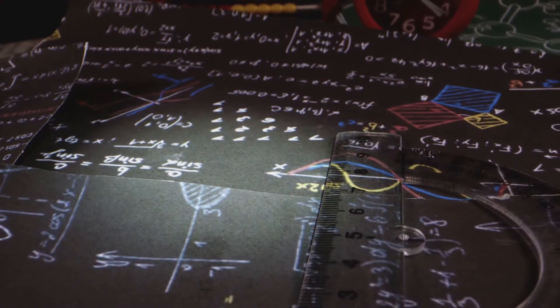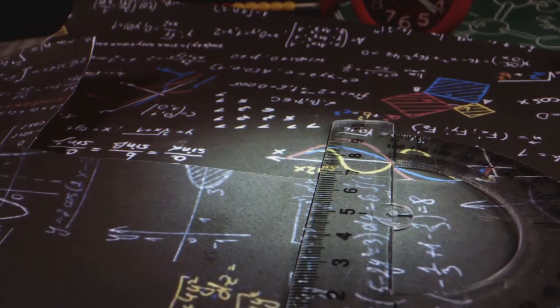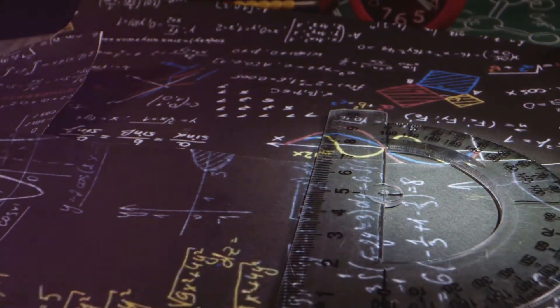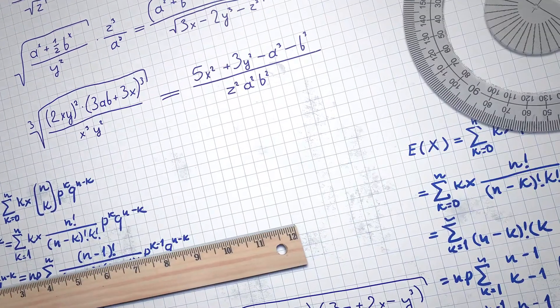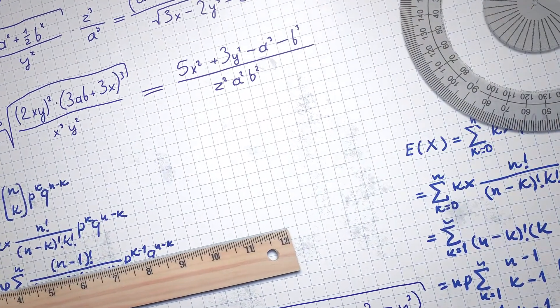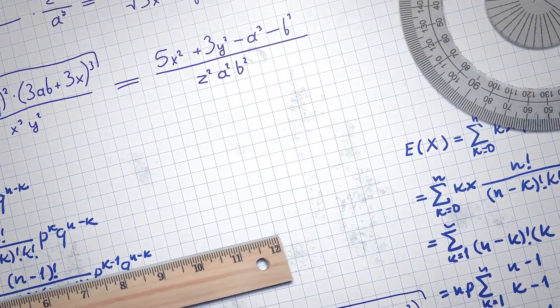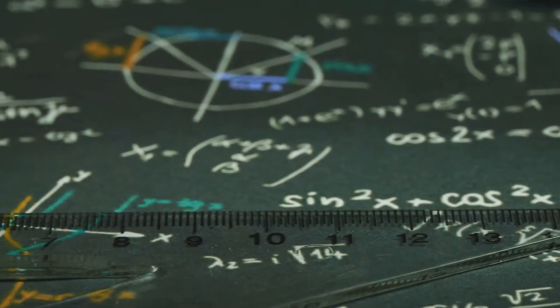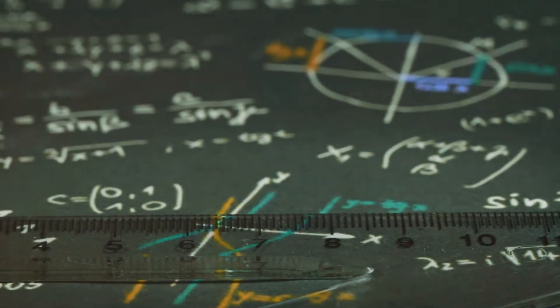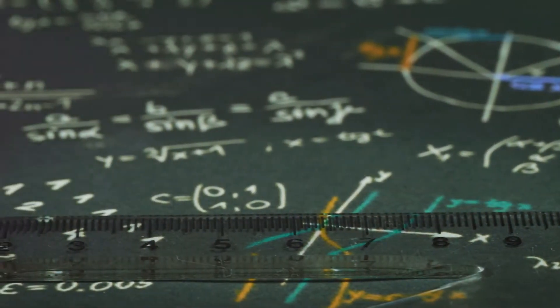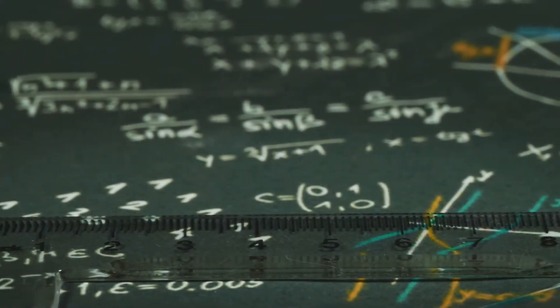Remember, every reading tells a story about the circuit's behavior. Happy measuring! Now let's meet the traffic cop of the electronics world: Ohm's law. This fundamental principle is the cornerstone of understanding how electrical circuits function. Without it, the world of electronics would be a chaotic mess, much like a city without traffic lights.